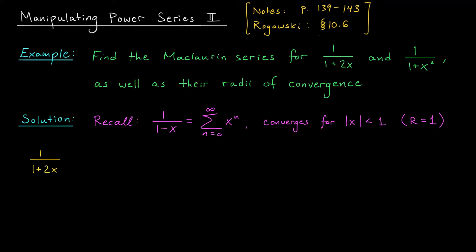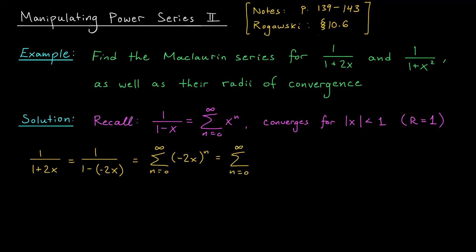So perhaps we can start with 1 over 1 minus x and its Maclaurin series and make some substitutions to get Maclaurin series for these functions. Let's try this with 1 over 1 plus 2x. To make this look more like 1 over 1 minus x, I'm going to rewrite the denominator as 1 minus negative 2x. We can make the same replacement in the Maclaurin series. The Maclaurin series for this function should be the sum from 0 to infinity of negative 2x all to the power n, which gives the sum from 0 to infinity of negative 1 to the n times 2 to the n times x to the n — that's 1 minus 2x plus 4x squared minus 8x cubed and so on.